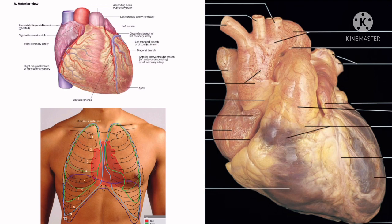In infants the heart is positioned more horizontally so that the apex lies in the third or fourth left intercostal space. Consequently, the apex beat in children up to the age of seven years is felt in the third or fourth intercostal space just lateral to the midclavicular line. Normally the apex of the heart is on the left side and the apex beat is felt in the left fifth intercostal space.